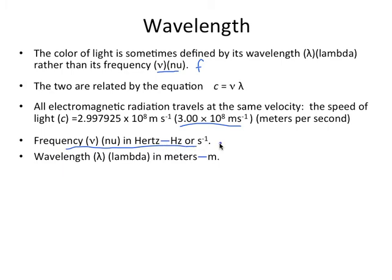Frequency uses the units Hertz, and it is the number of cycles per second. These waves are traveling through the air, and the number of total wavelengths that pass by that point in a second is known as the frequency. Lambda is measured in meters.